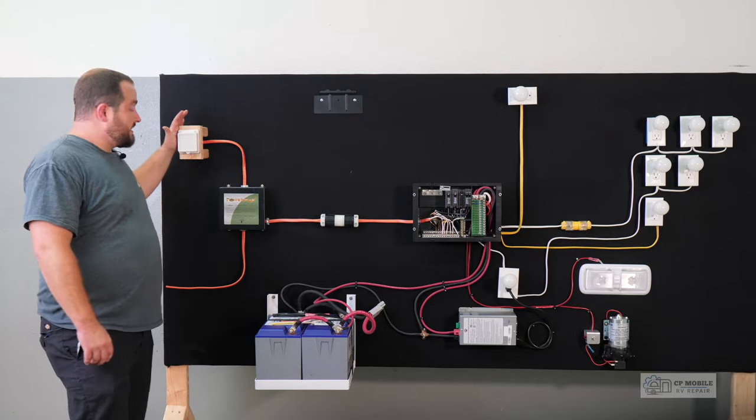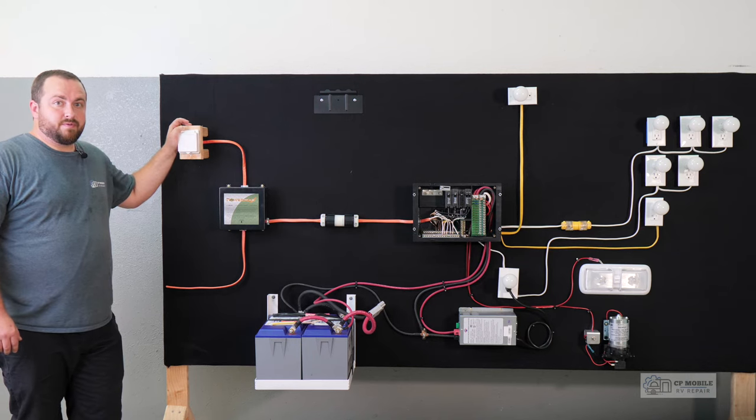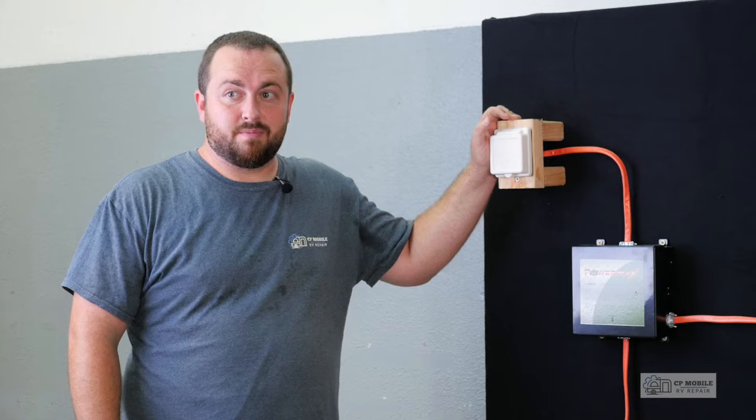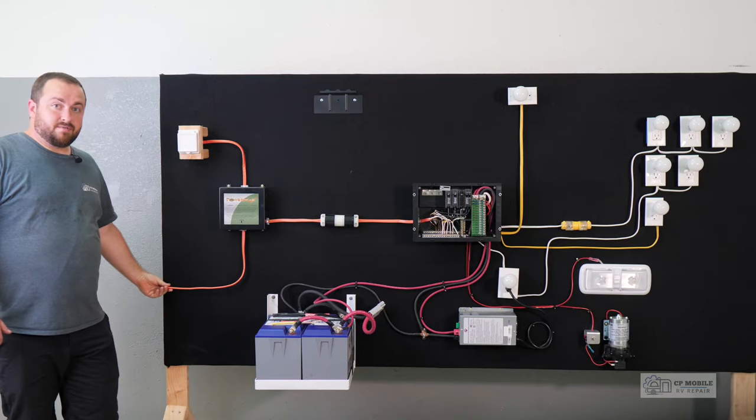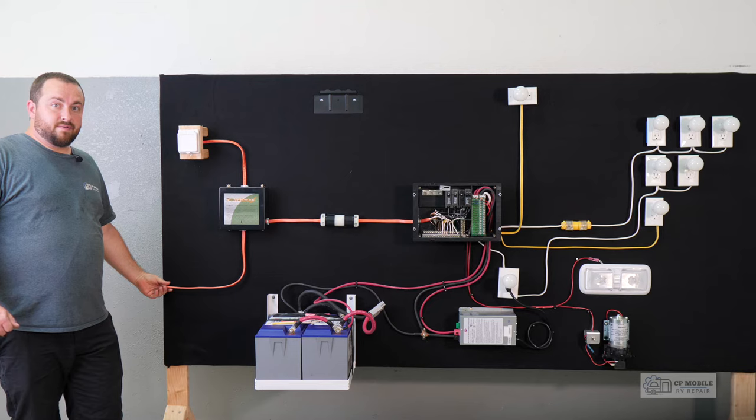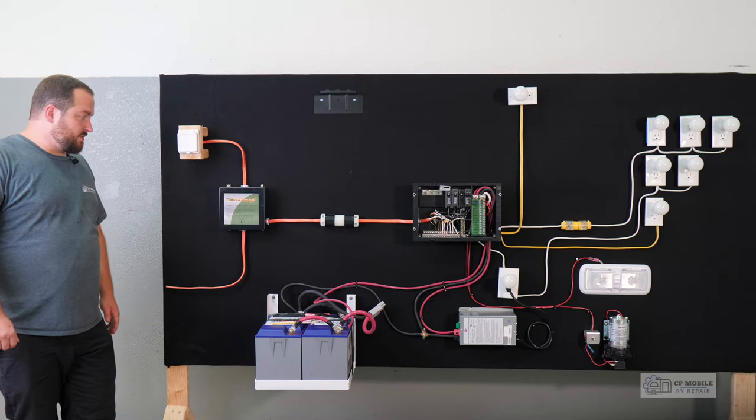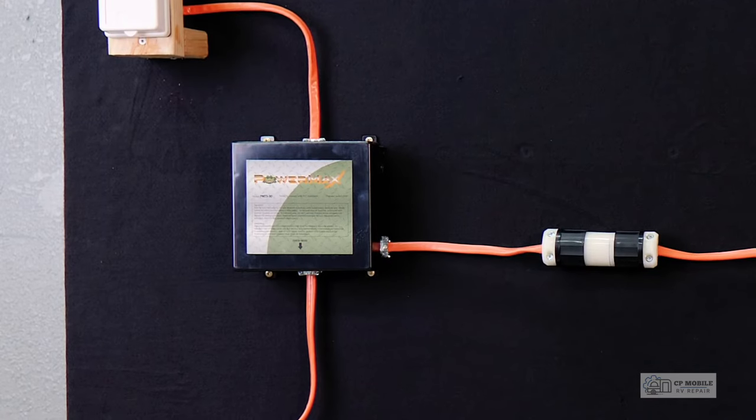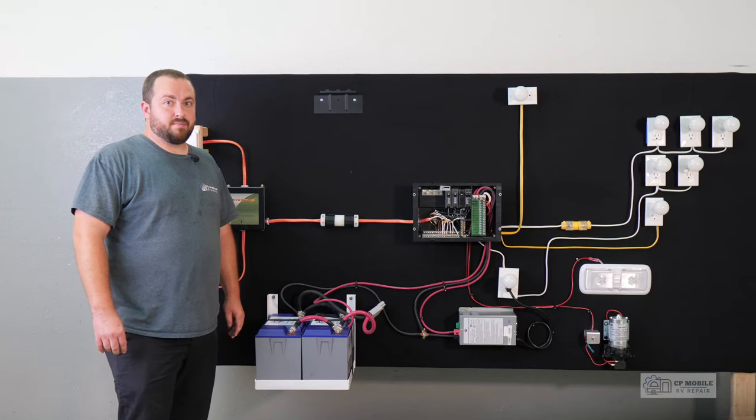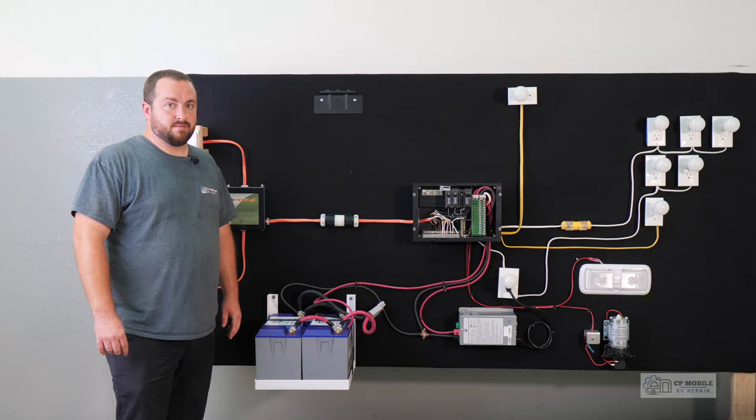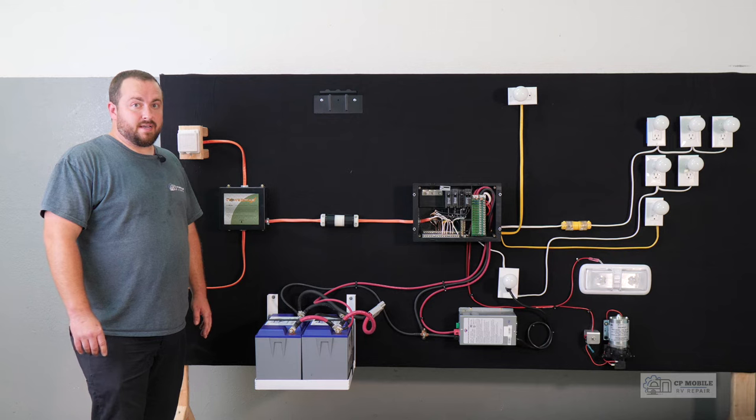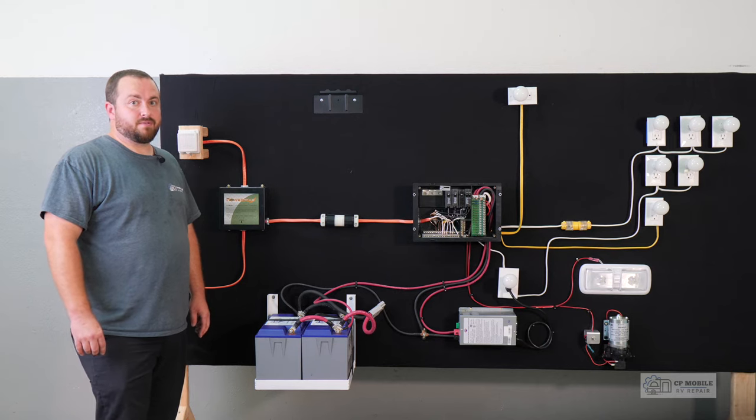Starting on the left side we have a shore power inlet up top which we would plug in with an extension cord to your house, an RV park, or a portable generator. Below that we have a circuit to represent a built-in generator that we would find in a toy hauler or on most motorhomes. Both of those run to our transfer switch. The transfer switch will only allow power from one power source to pass through, not both power sources. If your RV doesn't have a built-in generator and is not pre-wired for a generator it will not have a transfer switch, so power from the shore power inlet will go directly to our power distribution panel.